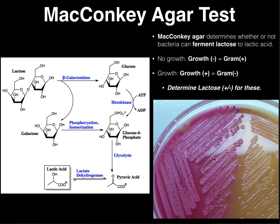One of the major things we also care about is that it's also differential. The differential nature of MacConkey agar has to do with the disaccharide — a carbohydrate called lactose, also embedded in the agar. It suffices to say that some bacteria are going to be able to metabolize lactose and ultimately ferment that lactose into acid end products, the major one of which would be lactic acid. Some bacteria will be able to ferment lactose — those would be considered lactose positive — and some bacteria will not be able to ferment lactose — those would be lactose negative.